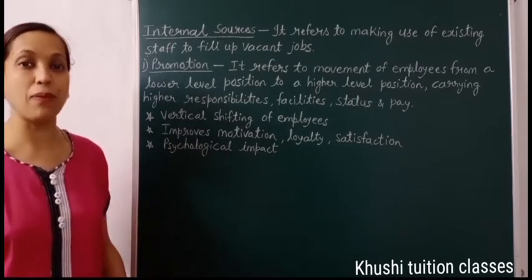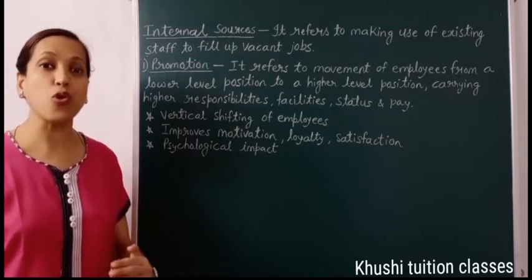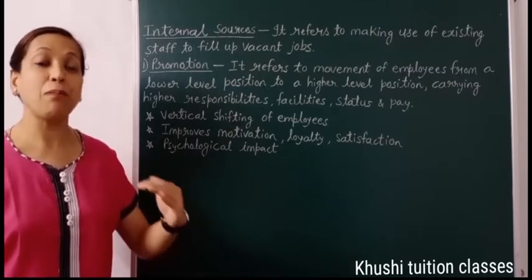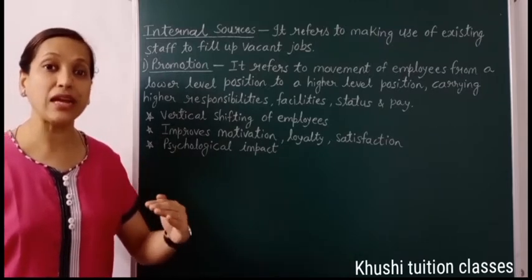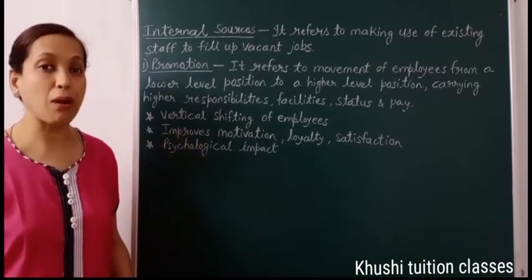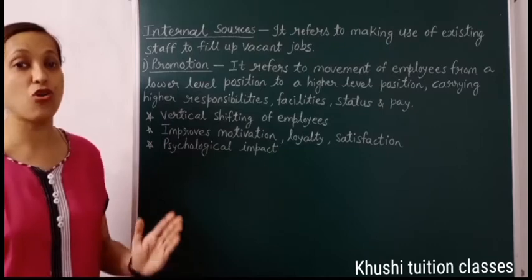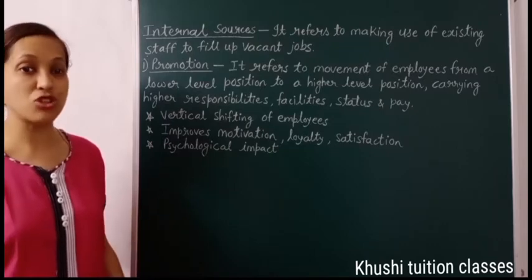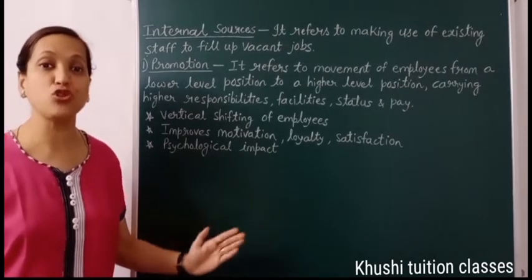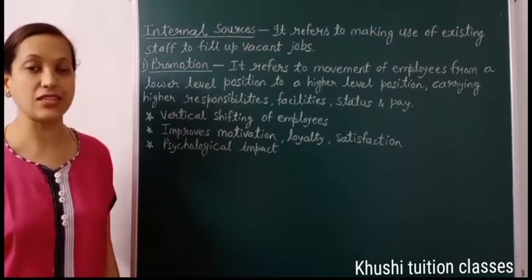See one more example: a foreman or superintendent promoted to plant superintendent, then plant superintendent promoted to production manager. So this is a vertical chain of promotion which gives psychological benefit to all the employees in the organization.